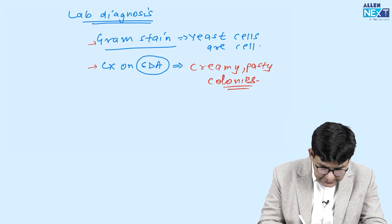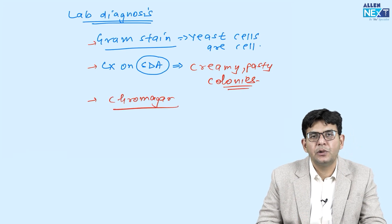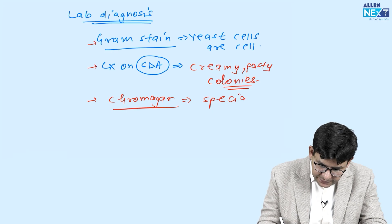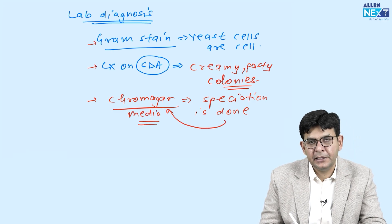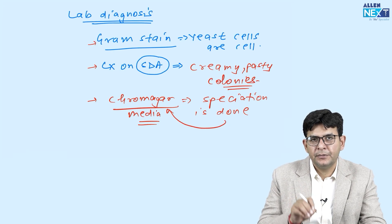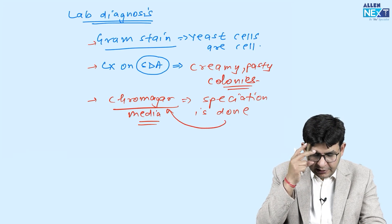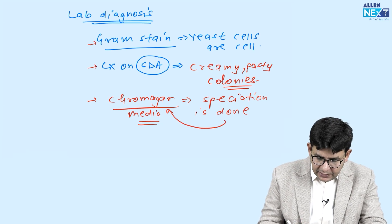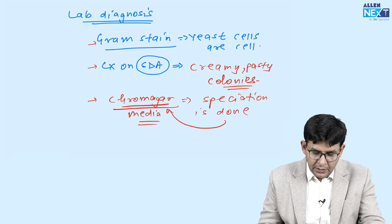A recent important question topic is chrome agar. Chrome agar is used for speciation of Candida — different Candida species produce colonies of different colors on this media. According to the color chart of the chrome agar, you can identify which particular species of Candida is growing.